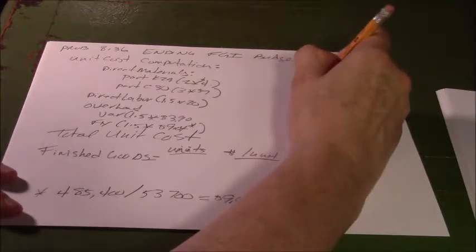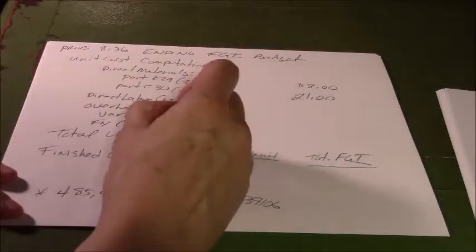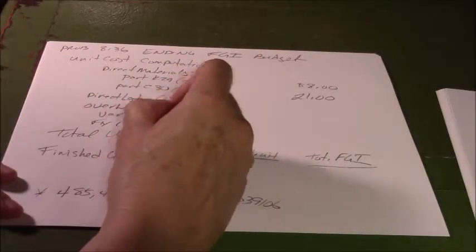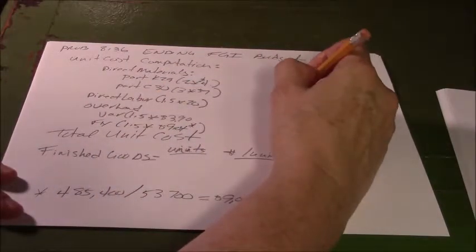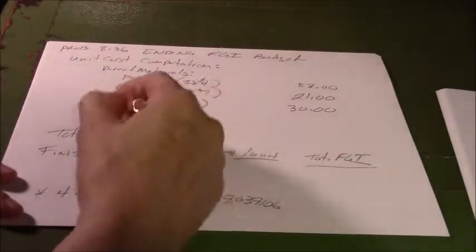We remember our direct labor was $20. It takes an hour and a half to make a unit, so that's $30 per unit on the direct labor.